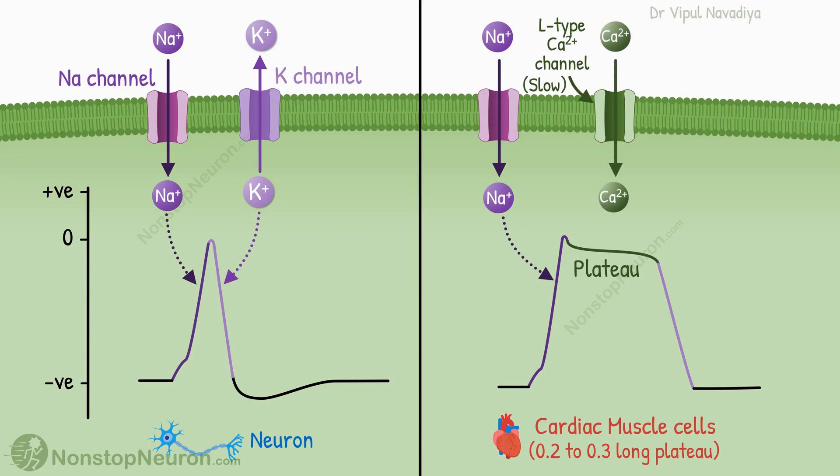Because of this, the calcium ions keep diffusing into the cell for quite a long time. This keeps the cell depolarized for longer, and this is seen as a plateau in the action potential. So this is the main mechanism behind the plateau.